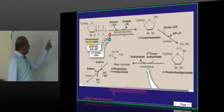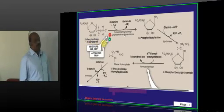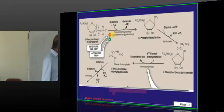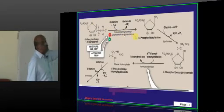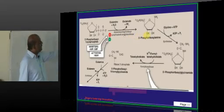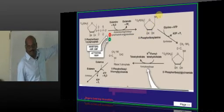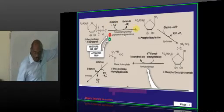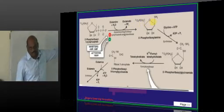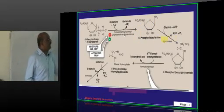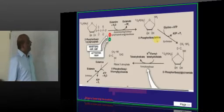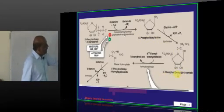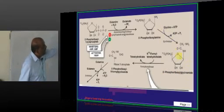Then, the 5-phosphoribosyl-1-pyrophosphate is acted upon by an enzyme called glutamine-phosphoribosyl-pyrophosphate-amidotransferase. Amido means what is added to that? A nitrogenous base is added. And who is contributing that nitrogenous base? Glutamine converts to glutamate and contributes the NH2. And that forms the 5-phosphoribosyl amine. And that, in turn, is converted into 5-phosphoribosyl-glycinamide, where glycine contributes.